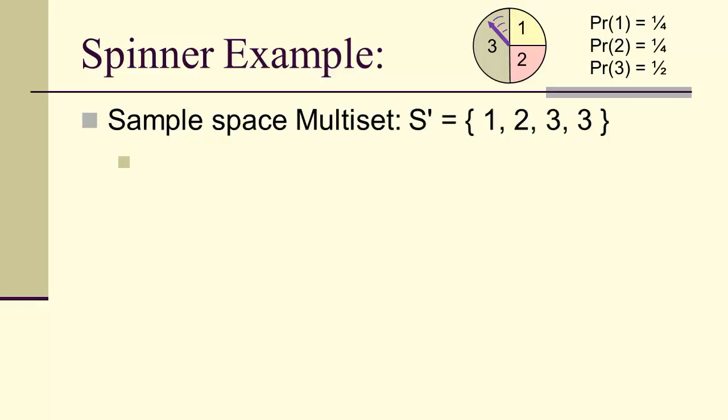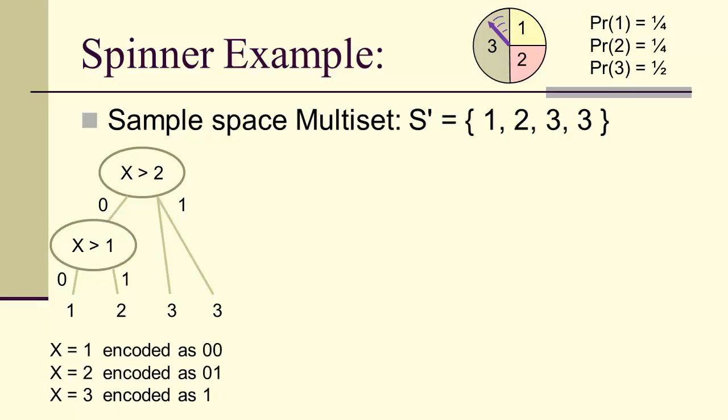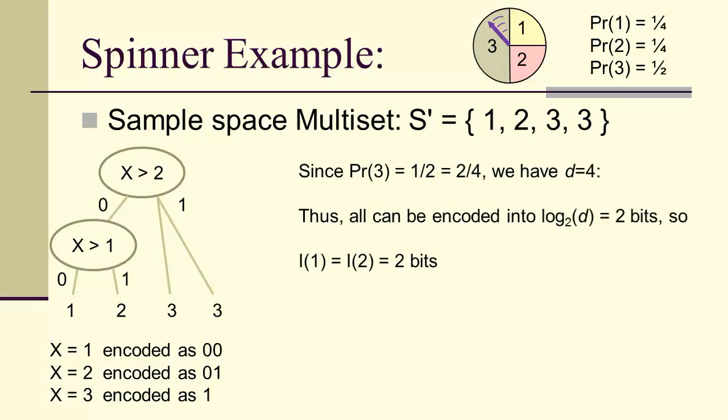Let's look at an example. Here we have a spinner. And three is twice as likely as one or two. So probability one and two are a fourth, probability three is a half. We can represent this as a multi-set and we can do the balance tree. So x greater than two is either zero or one. And then we have another decision, x greater than one, and that's either the one or the two. So one can be encoded as zero zero, and two can be encoded as zero one, and three is just one.